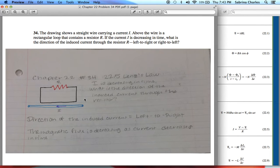I is decreasing in time and they want to know the direction of the induced current through the resistor. The magnetic flux is decreasing as the current decreases in time and I concluded that the direction of the induced current is left to right.